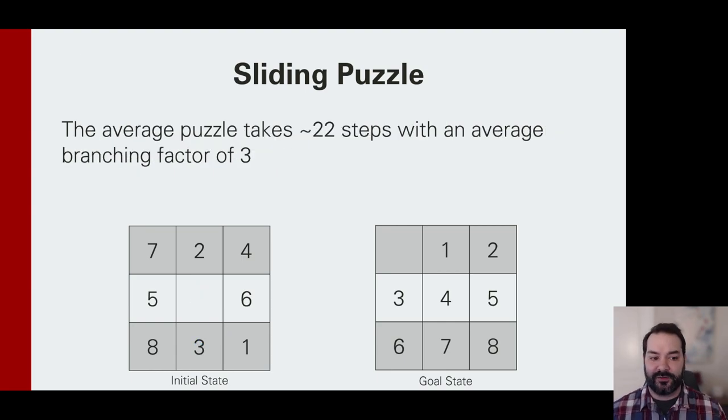When we think about the sliding puzzle problem, any one puzzle typically takes roughly about 22 moves to get to our goal state. To keep with the vocabulary we've seen throughout the lecture, we think about it as having a branching factor of about three. What we're talking about there is specifically how many moves in one step?